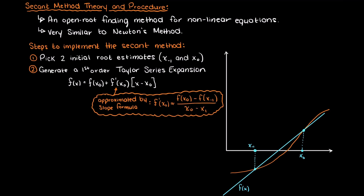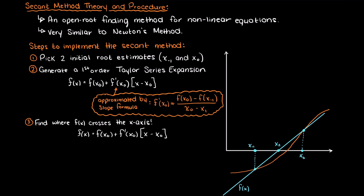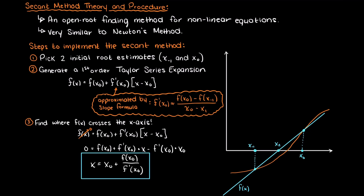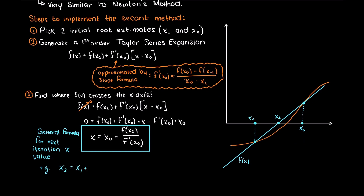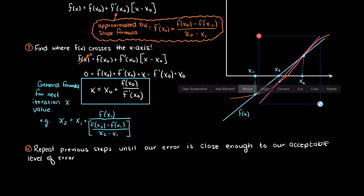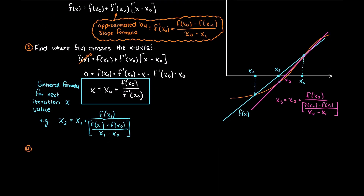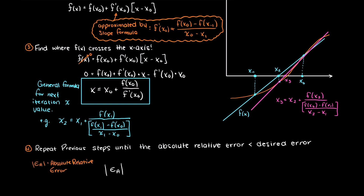Step 3: we must find where the secant line crosses the x-axis, just like we did in Newton's method. We set our output to 0, then expanding we can isolate our function for the input that gives us an output of 0. The x value that we find here is our next iteration's x value. Then we just repeat the previous two steps until where we cross the x-axis is sufficiently close to our acceptable error. And we can find the error using this formula like so.